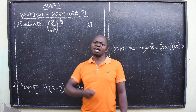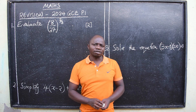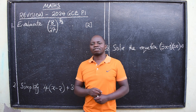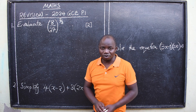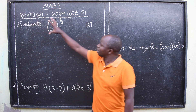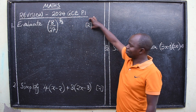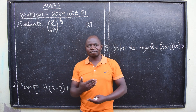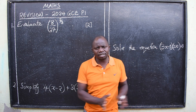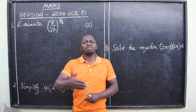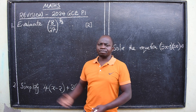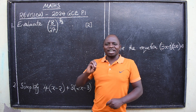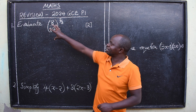There is always a condition — instructions given to candidates that says omission of essential working will result in loss of marks. So you should always show your working so that as the marking is done at the marking centre, you receive credit. Now, as you're doing revisions and going through past papers, that is fine, but you need to be very careful. Questions are not repeated exactly the way they are.